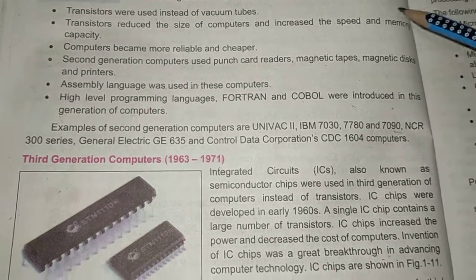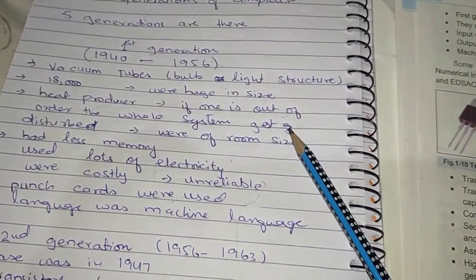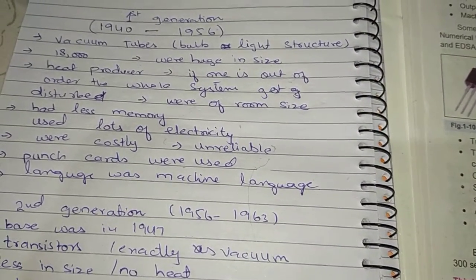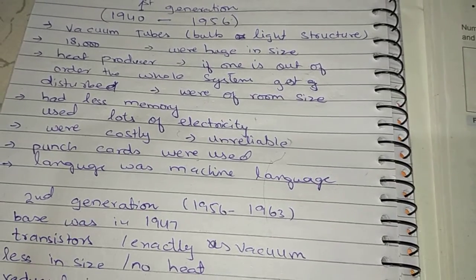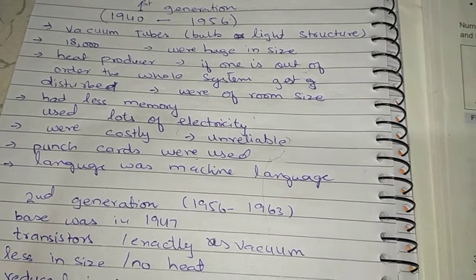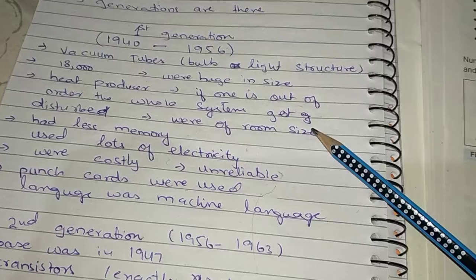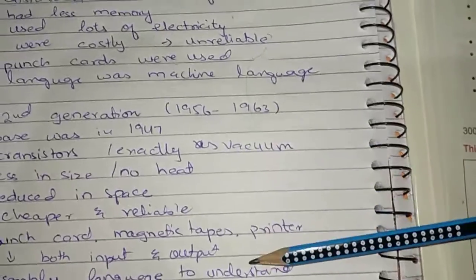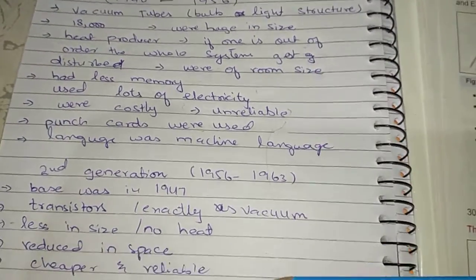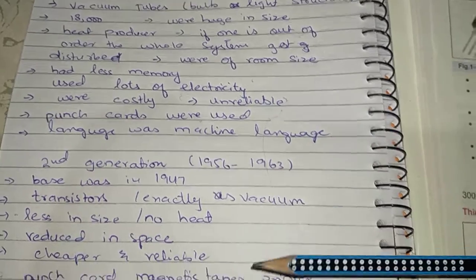The difference between first and second generation was: first generation used vacuum tubes, second generation used transistors. Vacuum tubes were big in size and costly, while transistors were small in size, cheap, and reliable.